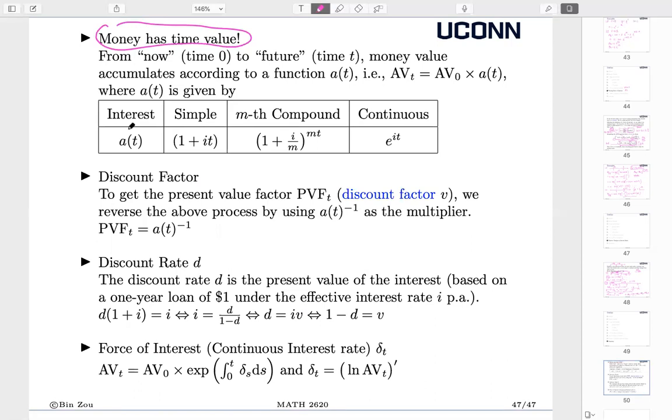There are different choices for accumulation function. There are the simple, the m-th compounding, there are the continuous. Sometimes I may write this to denote the interest rate I have is nominal interest rate. But sometimes I just want to keep notation simple, I may use i, but obviously it's better to write i_m with M as superscript to denote that is nominal interest rate per annual. Because it is different from the effective interest rate, which we usually use i to denote. As mentioned, discount factor is nothing but the reciprocal of the accumulation.